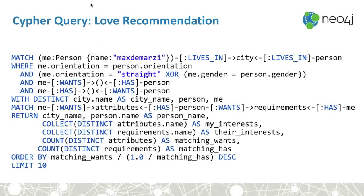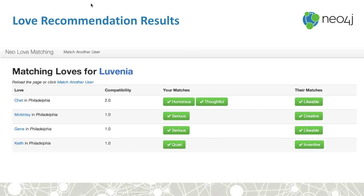We collect all the interests and do a division at the end, ordering by descending score, to provide the user an interface similar to our job recommendation. Here we have Luvenia, who matches four people in Philadelphia. They matched over traits like humorous and thoughtful, or likable on the other end. These are random adjectives, but they could be anything at all.